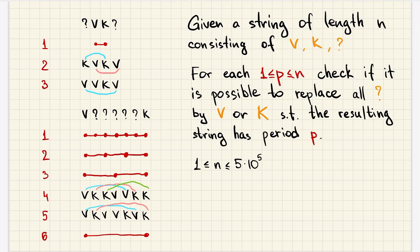So on the left you can see some examples. If we are given the string of length 4, if p equals 1 then those two characters should be equal but they are not.